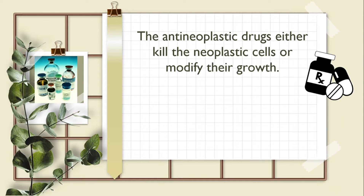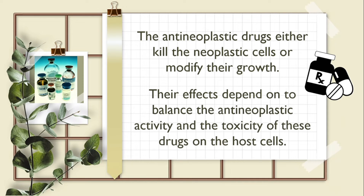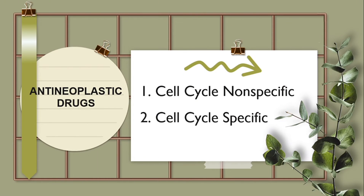The antineoplastic drugs either kill the neoplastic cells or modify their growth. Their effects depend on the balance between the antineoplastic activity and the toxicity of these drugs on the host cells. The antineoplastic drugs may be either cell cycle non-specific, which kill resting as well as dividing cells, or cell cycle specific, which kill only actively dividing cells.